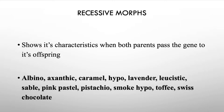Now let's get into recessive morphs. Recessive traits show their characteristics when both parents pass the gene to the offspring — the animal must have two copies to visually express it. Some examples of recessive morphs are: albino, axanthic, caramel, lavender, leucistic, sable, and more — this list is just a few, there are others.